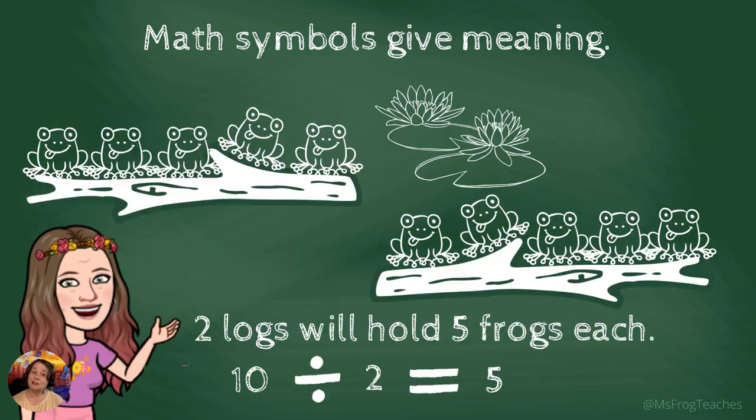Well, we would divide. We would use the divide symbol to show the relationship between 10 and two. We would have two logs hold five frogs. 10 divided by two equals five, or is the same as five.